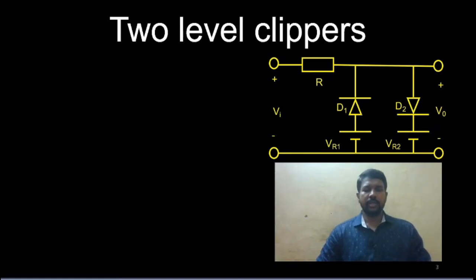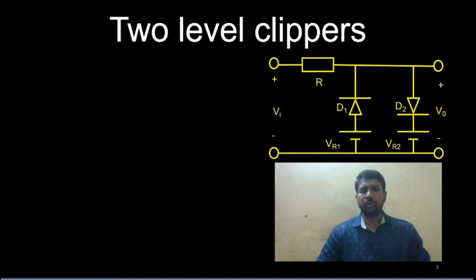Hello everyone. In today's lecture we are going to discuss two-level clippers. Observing the circuit diagram, when we compare with series clippers or shunt clippers where we had only a single diode and at most a single reference voltage, here you can see two diodes denoted by D1 and D2, and two reference levels denoted by vr1 and vr2.